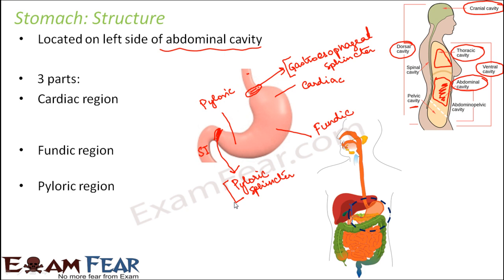It can seem surprising that so much food goes into such a small stomach — that is just how it is. These sphincters separate the stomach from other organs like the esophagus and small intestine. The capacity of a stomach is to hold almost around 1.5 gallons of food plus liquid — that is its maximum capacity. However, the stomach is not meant to hold food all the time; it holds food for only a few hours, after which the food moves into the small intestine for further digestion.